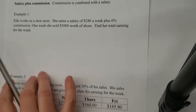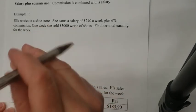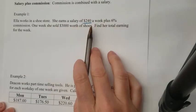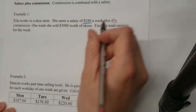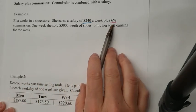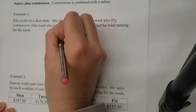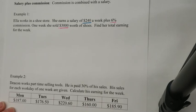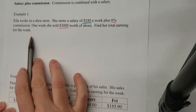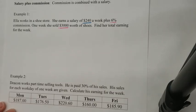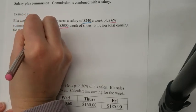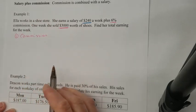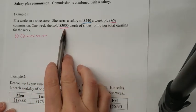Here's the first example. Ella works in a shoe store. She earns a salary — so even if she has no sales, she's going to get paid — plus 6% commission. So the more she sells, the more she'll get paid. In this particular week, she sold $3,000 worth of shoes. Find her total earnings for the week. The first thing we need to do is figure out how much she made in commission, so our first step is to calculate the commission.